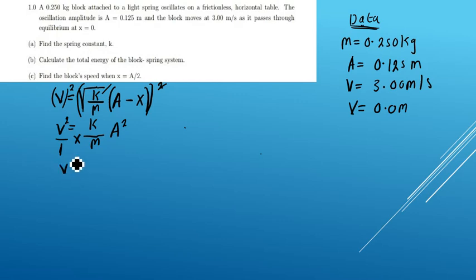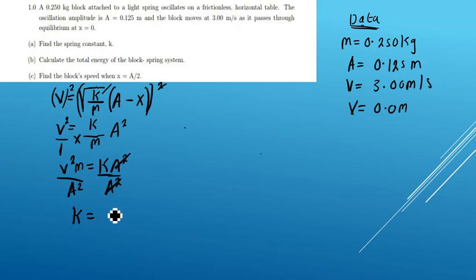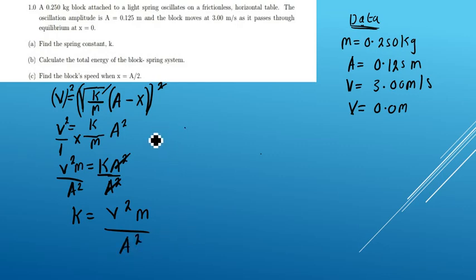After squaring both sides, we have v squared times m equal to k times a squared. From here we divide both sides by a squared, and finally our spring constant is equal to v squared times m over a squared.